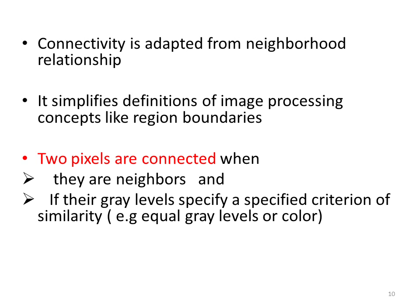Connectivity and adjacency concepts. Connectivity is adapted from neighborhood relationships. This simplifies definition of image processing concepts like region boundaries. Two pixels are connected when they are neighbors and their gray levels specify a specified criterion of similarity. This criterion could be equal gray levels or color.